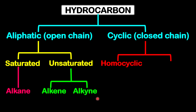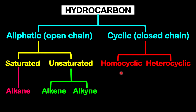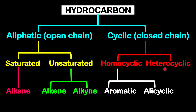For the cyclic group, it could be homocyclic or heterocyclic. As the name suggests, 'homo' means same, so the atoms within the ring will be the same — specifically carbon. For heterocyclic, the ring will not only be carbon; it will include other atoms or elements. For homocyclic, there are two further groups: it could be aromatic or alicyclic.